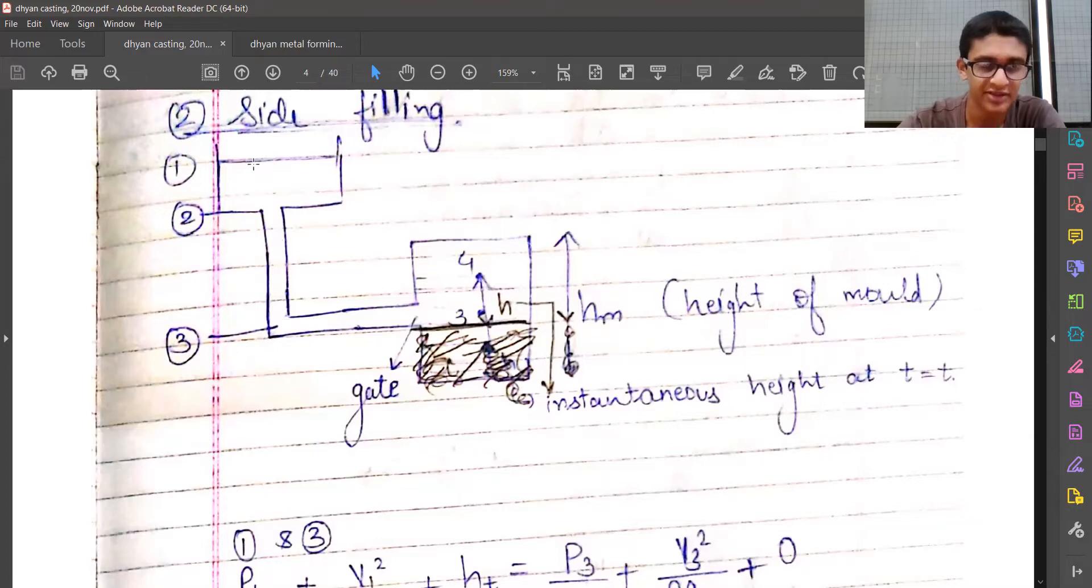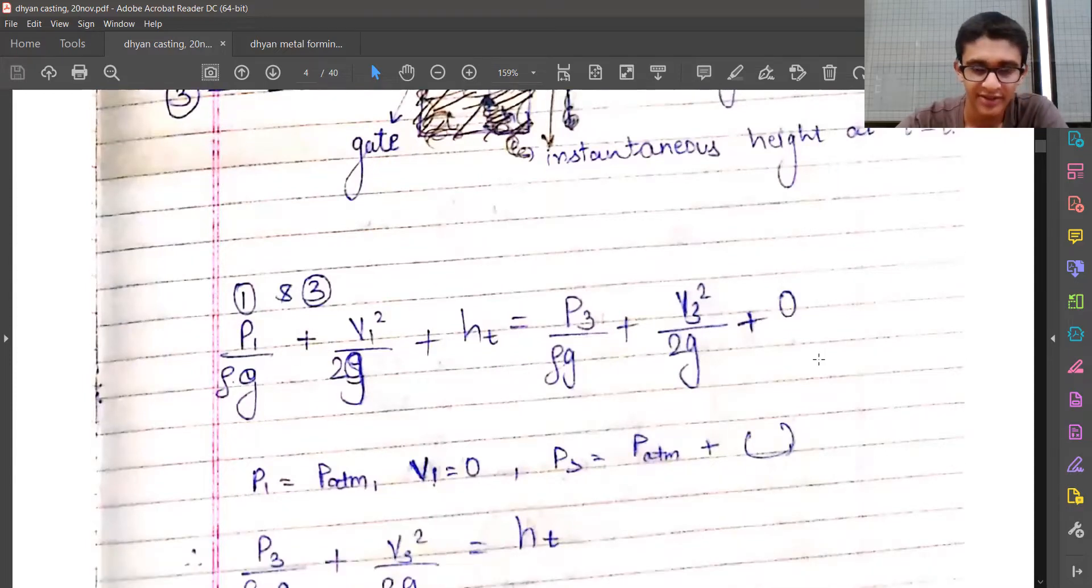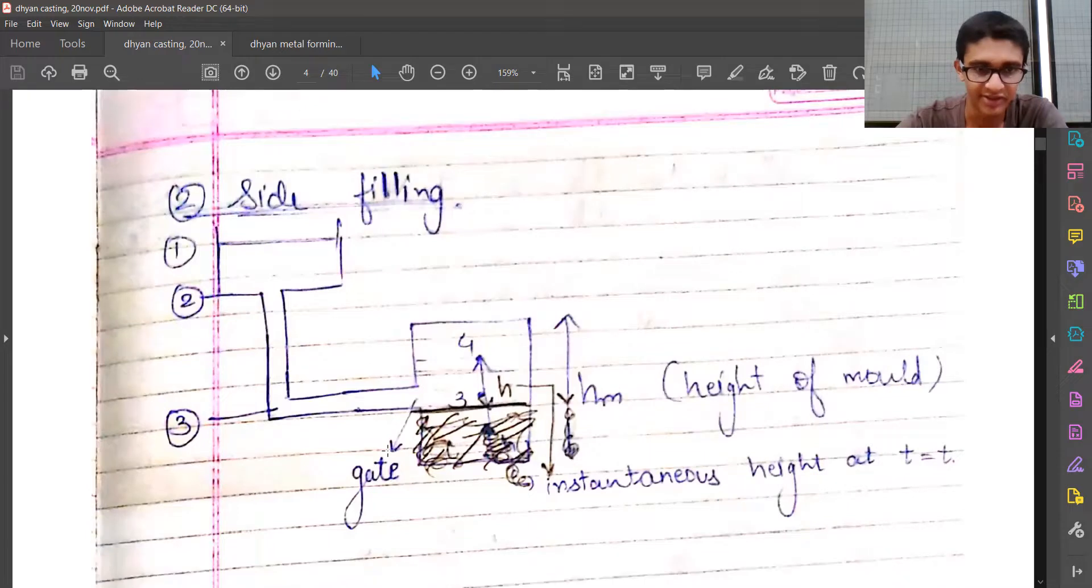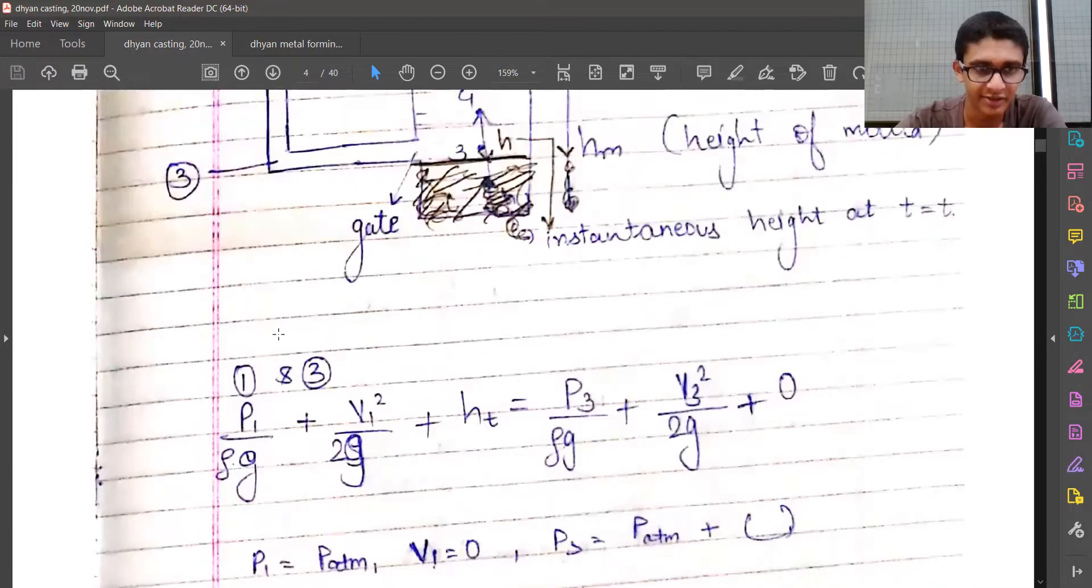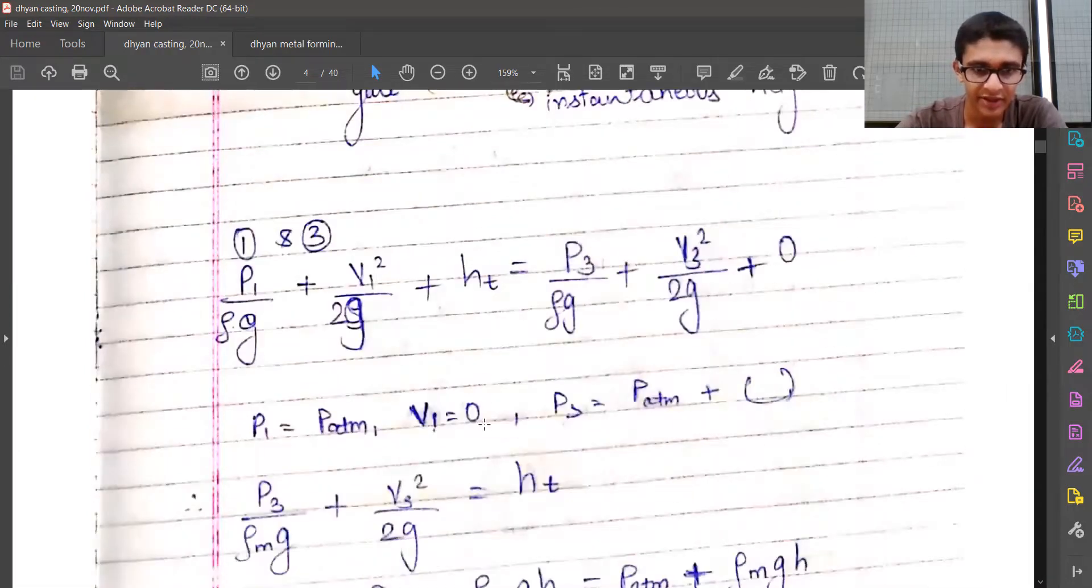We'll apply Bernoulli's equation between locations 1 and 3. h3 is zero because we're taking the reference at location 3. p1 equals patm because it's a free surface open to atmosphere.